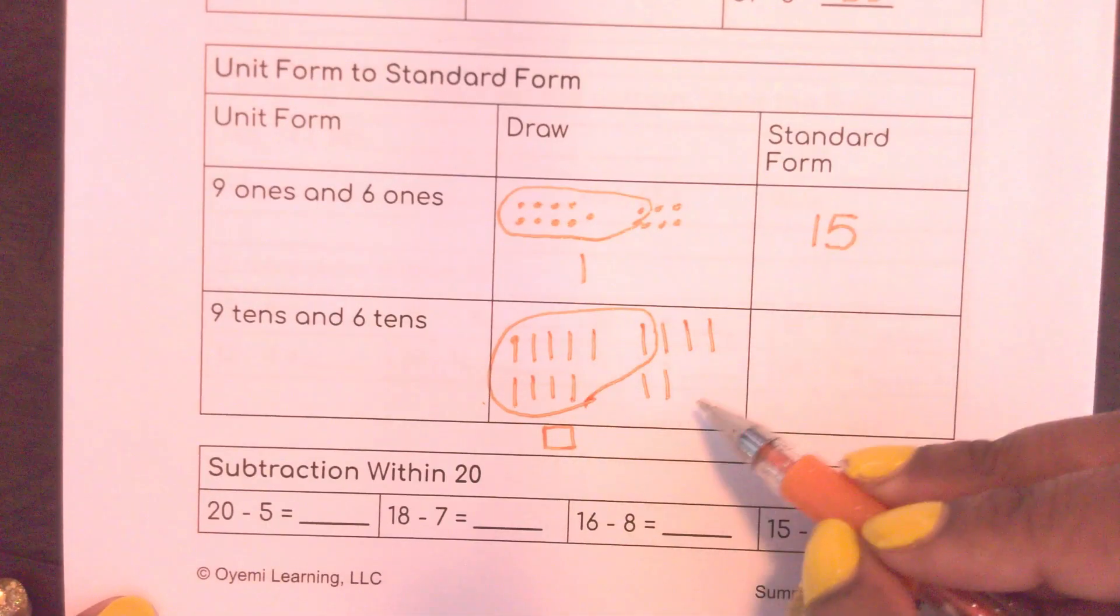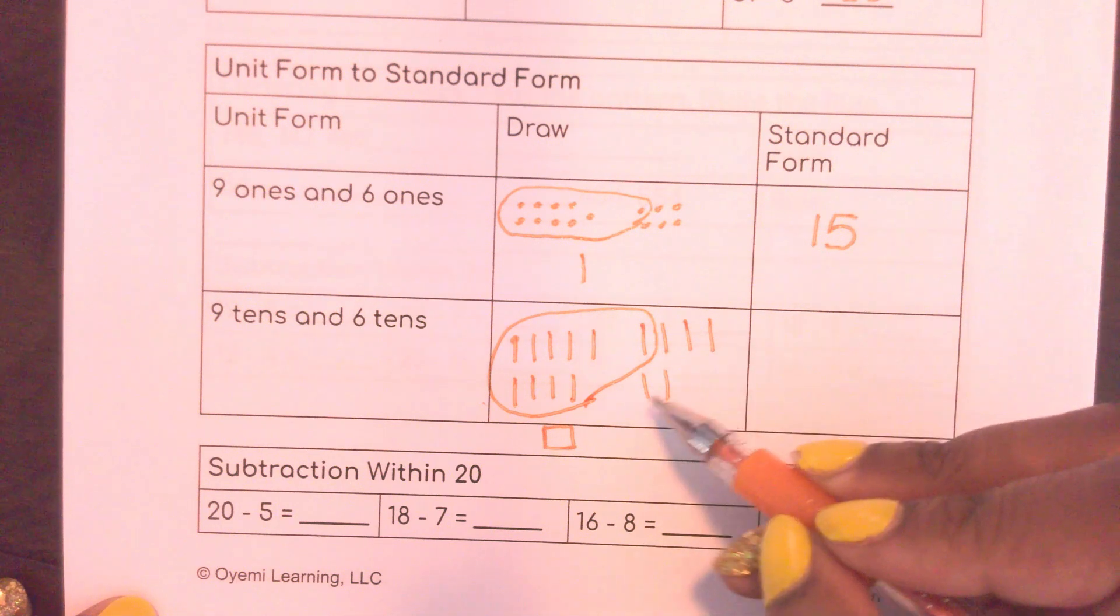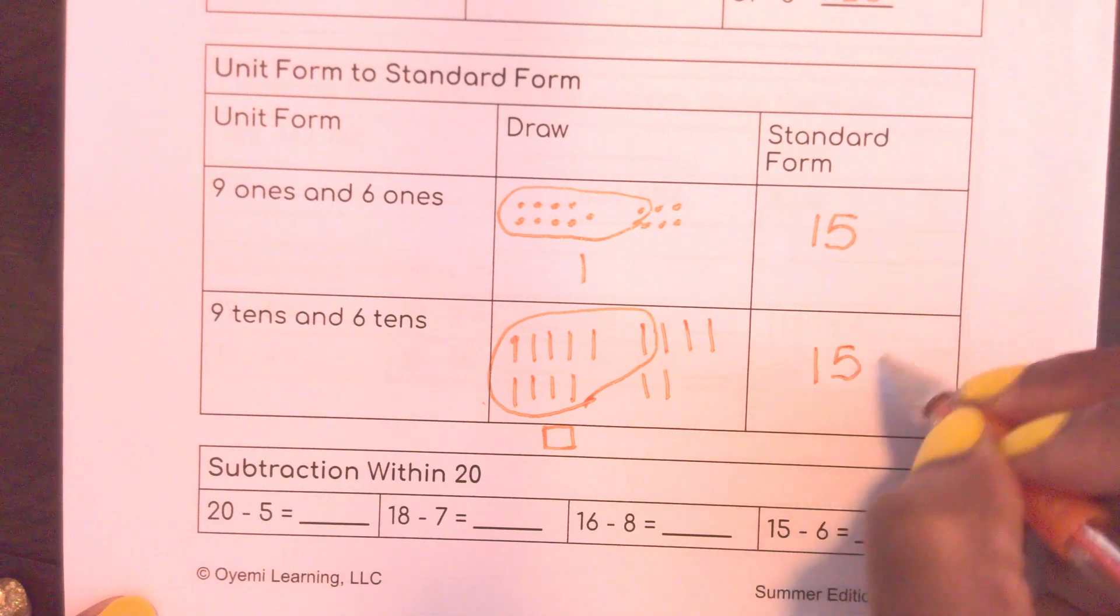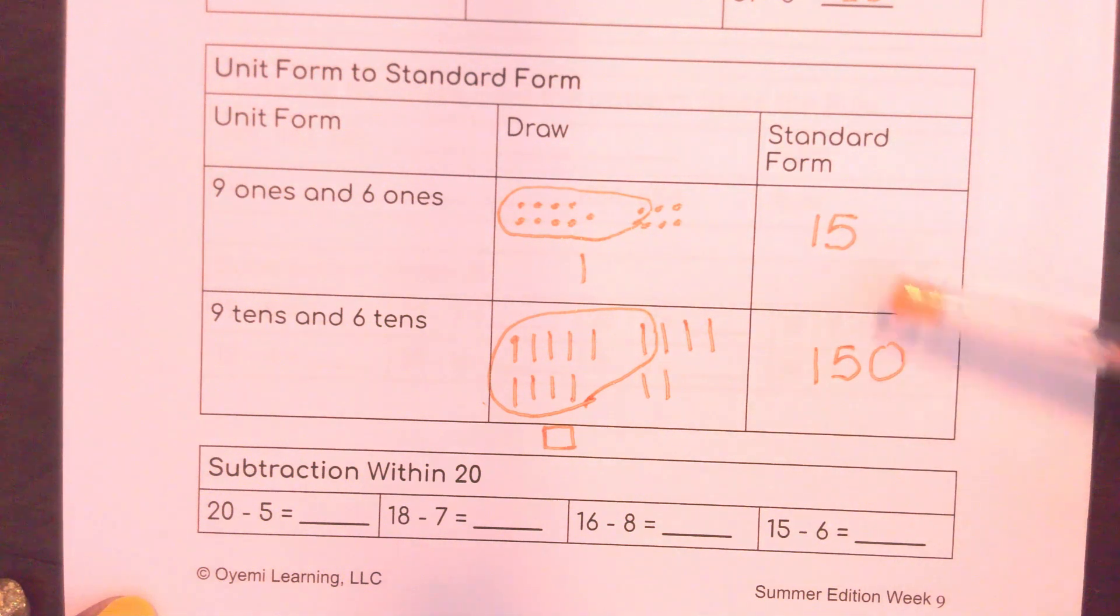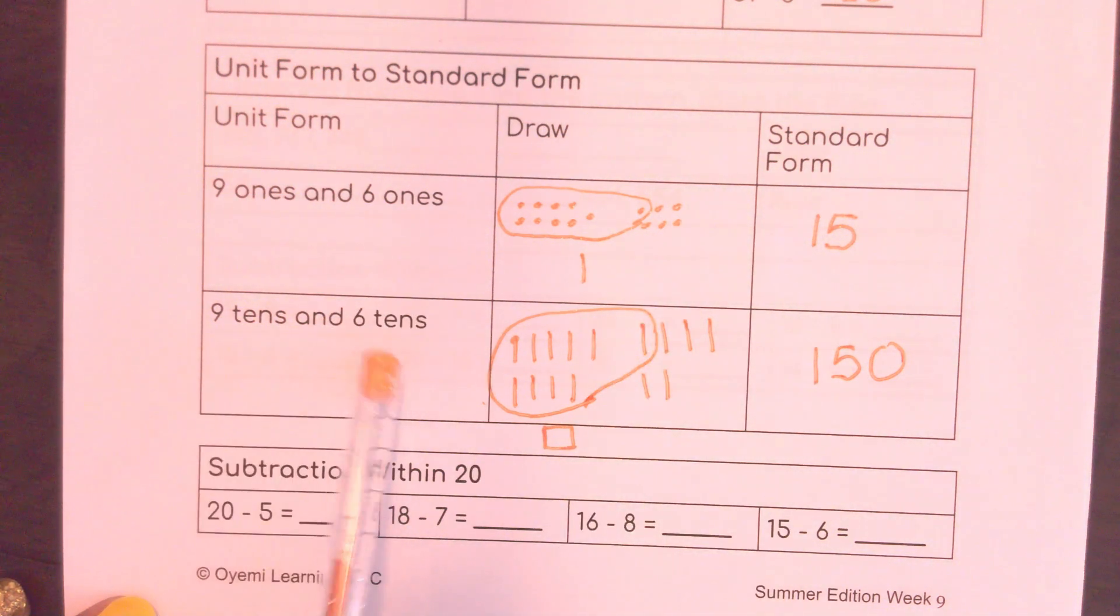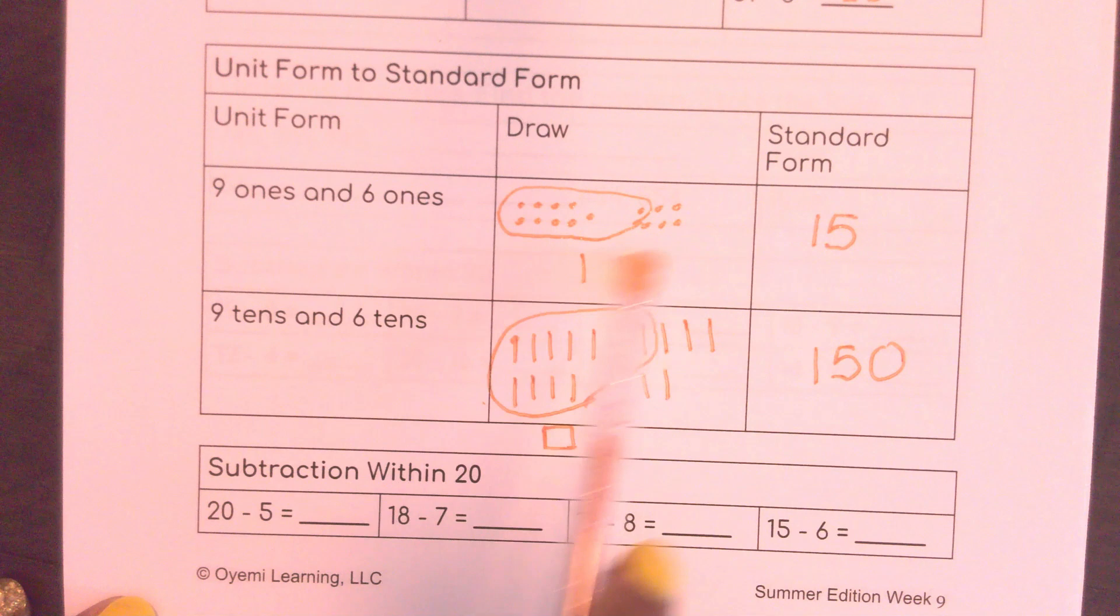How many tens do I have left? 10, 20, 30, 40, 50. So in standard form this number would be 150. These numbers seem related. Here I had 9 ones and 6 ones, and I ended up with 15 tens. Here I had 9 tens and 6 tens, and then I ended up with 15 tens. 15 tens gives me 100 and 5 tens. 15 ones gave me a 10 and 5 tens. So good to see the pattern and numbers.